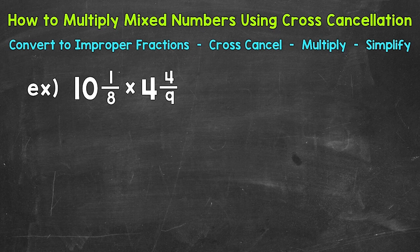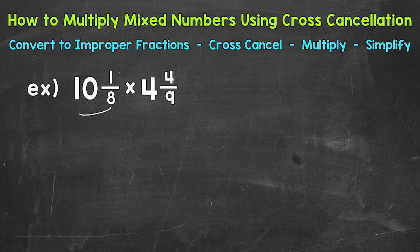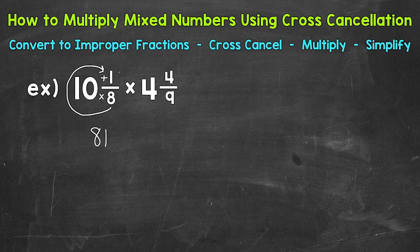The first thing that we need to do is convert these mixed numbers to improper fractions, that way we just have a numerator and a denominator. We'll start with 10 and 1 eighth. We multiply then add — denominator times the whole number. So 8 times 10 is 80, plus our numerator of 1. So 80 plus 1 is 81. That's our numerator of the improper fraction. We keep our denominator of 8 the same.